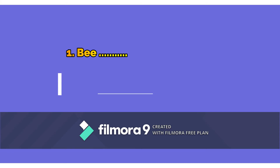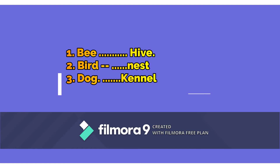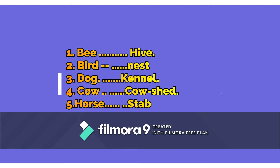Bee — Bee means Madhamashi. Bird — Nest. Dog — Kennel. Cow — Cowshed. Horse — Stable. Owl — Hole of tree.